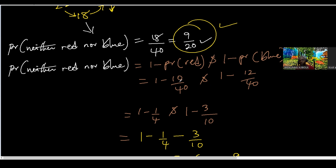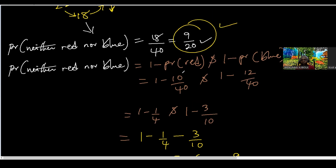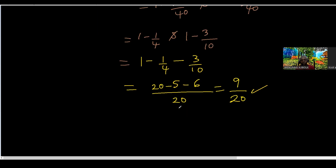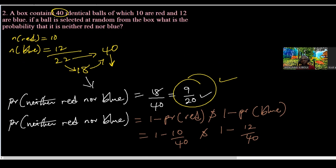So that is how to approach such questions. If we don't want to use the second method, we've used the first method to get our answer. But if they give several probabilities or conditions where the remaining 18 is not a single color, we just use one minus probability of red minus probability of blue to get the combined answer. I'll give you some time to write this down, then we'll look into more questions.